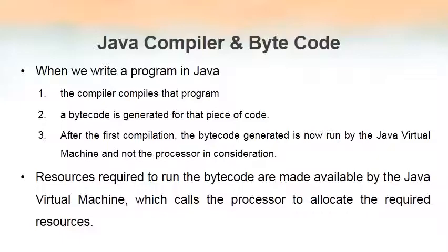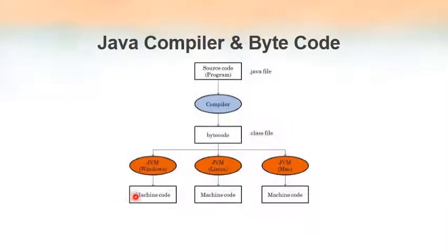Bytecode generated is run by the Java Virtual Machine. It is the responsibility of JVM to allocate the resources required — memory space, processor invocation — so the program can execute. Looking at the diagram: first we have the source code saved as a .java file. We then call the compiler, which converts the .java file into bytecode. The extension of the bytecode file is .class.